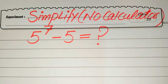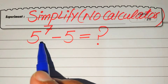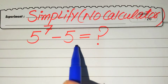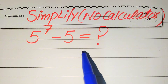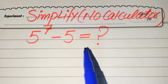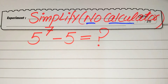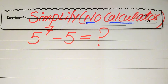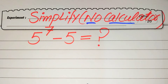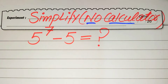Hello everyone. How to simplify this nice algebraic expression without using the calculator? We have 5 to the power of 7 minus 5. We write this algebraic expression into the lowest form, but remember that the calculator is not allowed in this problem. This means we need to show all of the working on this paper. We will solve this problem with a step-by-step solution.